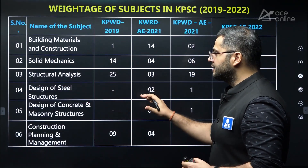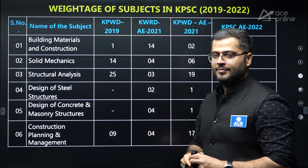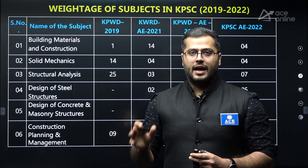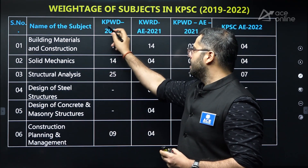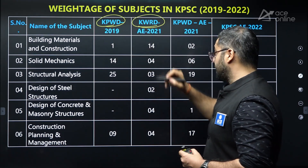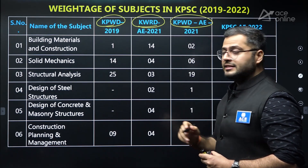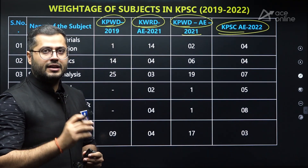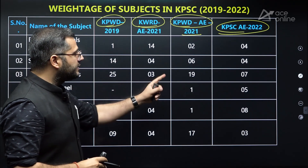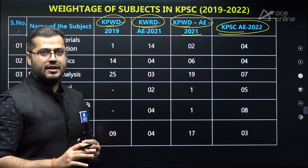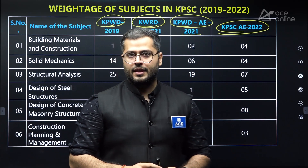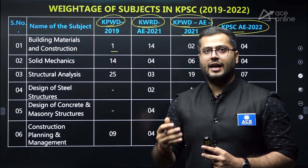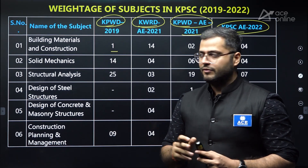In this slide, we will be starting with the weightage of all the subjects which have been asked in the years 2019, 2021 and 2022. The four papers we will be discussing are the KPWD examination, KWRD examination, KPWD AE examination of 2021, and KPSCA examination of 2022. Please note that in all of these examinations, the total number of questions asked were 100. The table shows, corresponding to each subject, the number of questions asked out of the total 100.